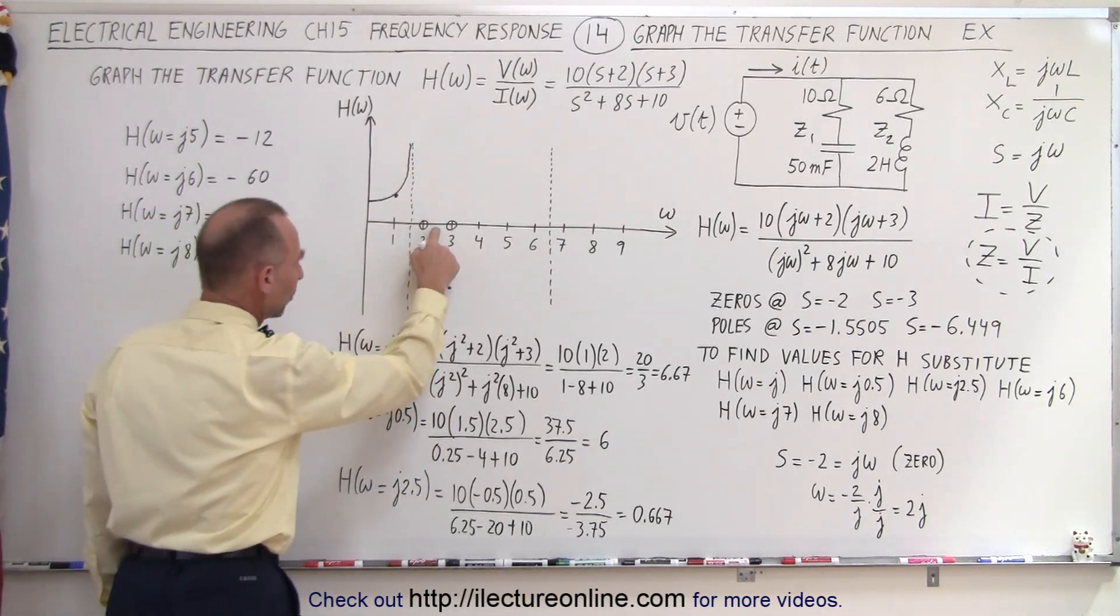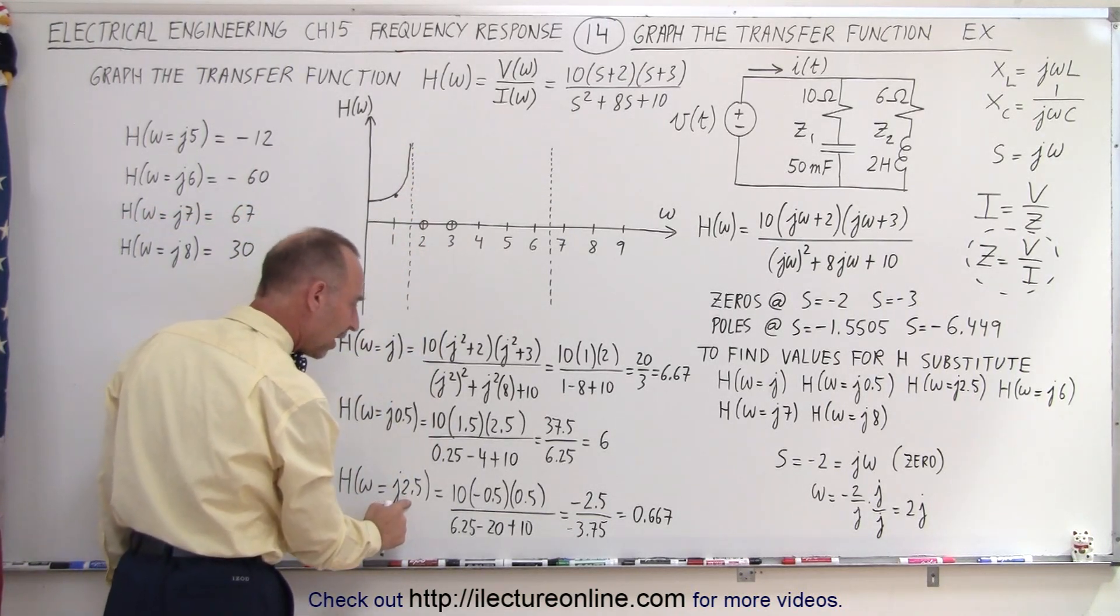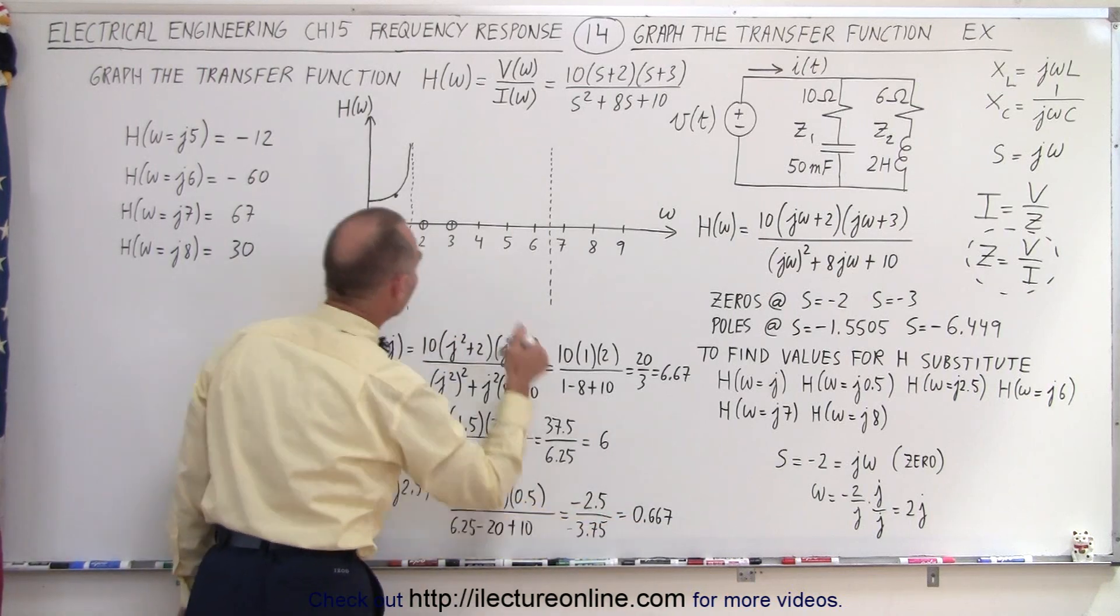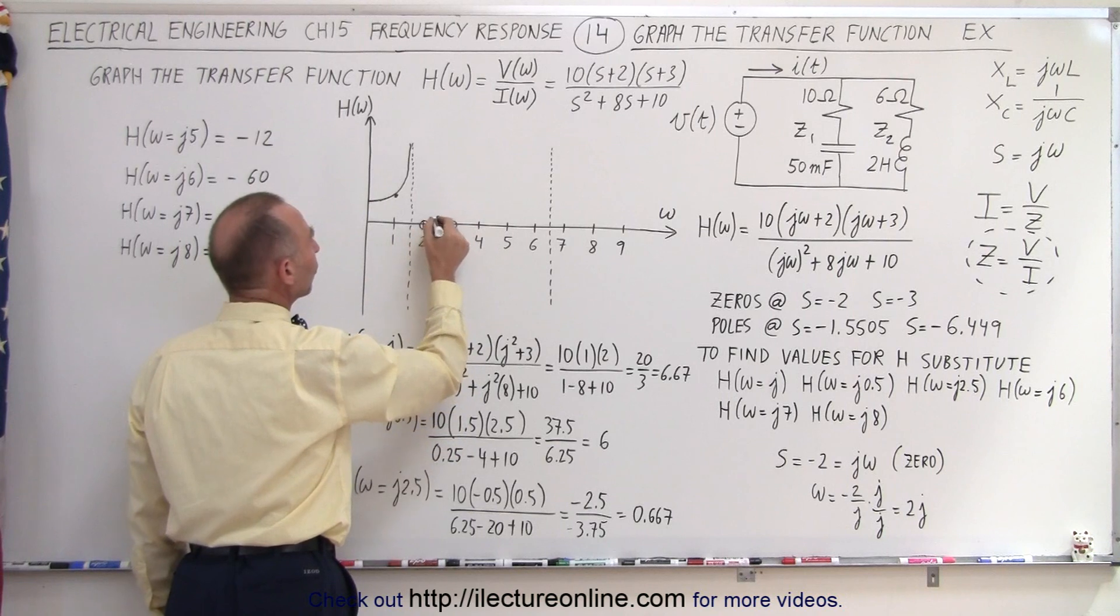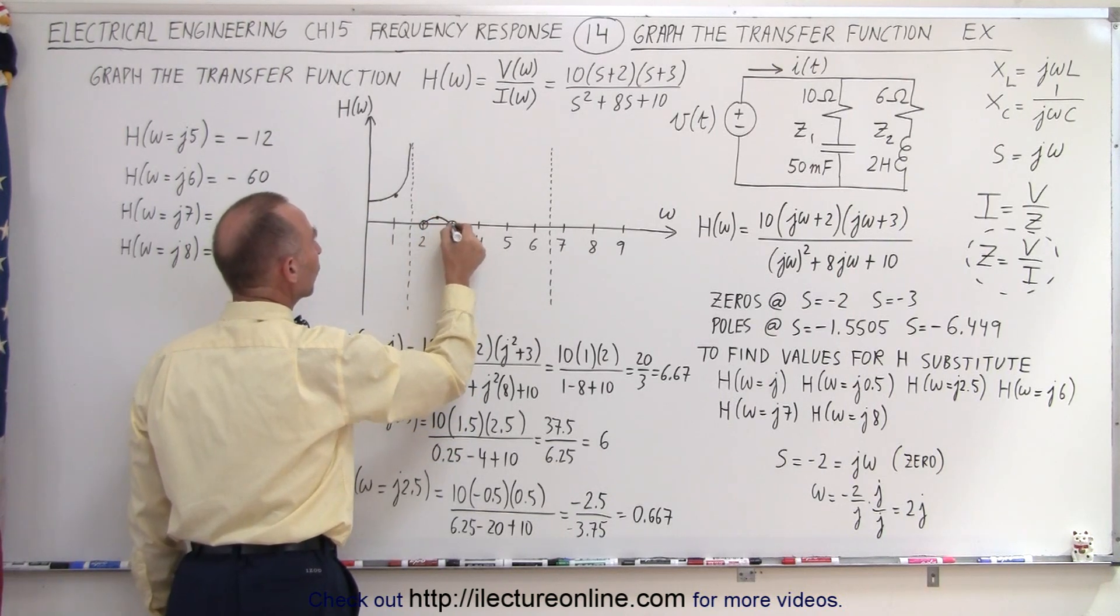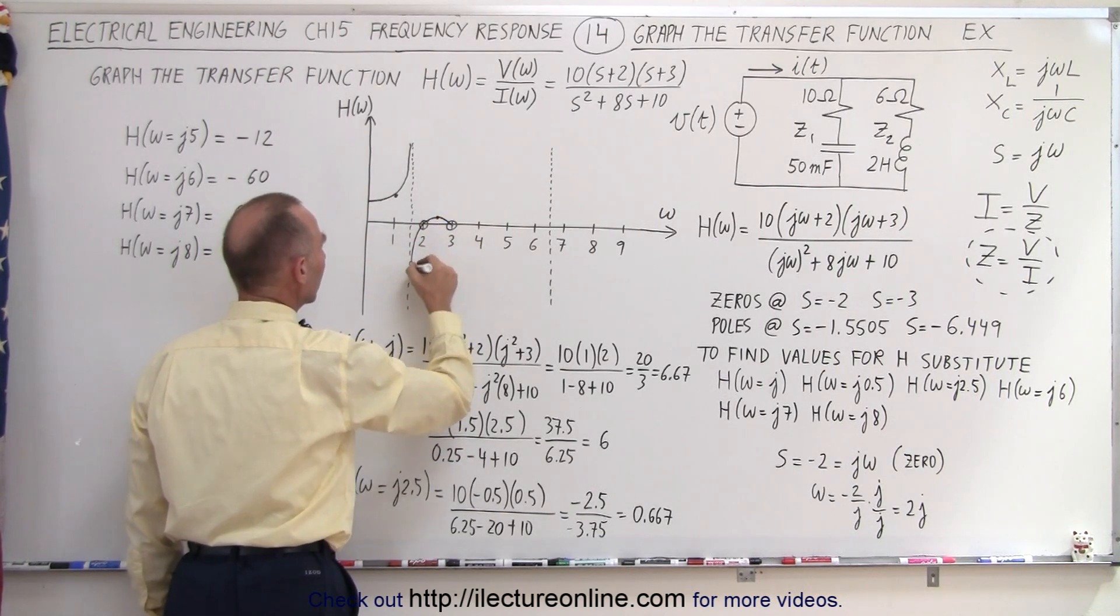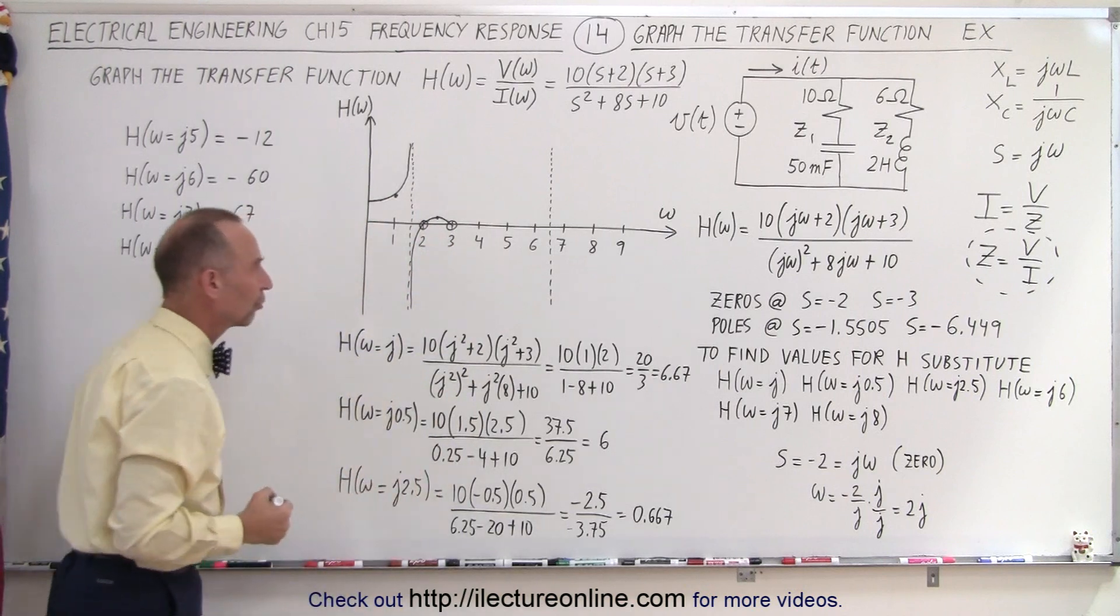What if we plug in 2.5? When we plug in 2.5, we get 0.667, which is just a little bit above the zero point. And since these are zeros, we can assume that the curve goes like this, and the curve continues asymptotically like that towards the pole.